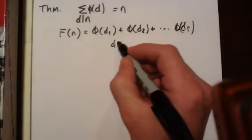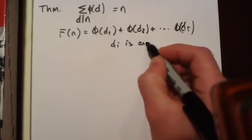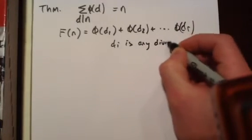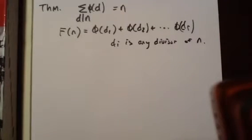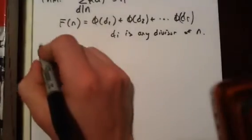Where di is any divisor of n. Okay, let's prove this.